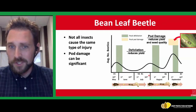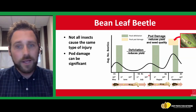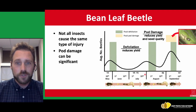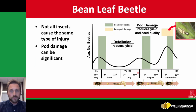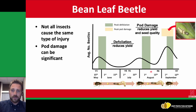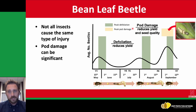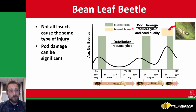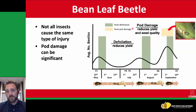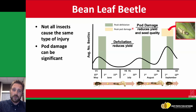Bean leaf beetle is back. It has two adult activity periods during the course of the summer, again overwintering as an adult. It's important as we get into the reproductive stages to acknowledge that this insect also feeds on pods. Pod damage reduces seed quality and yield, and it's an important factor to consider. So it'd be a good idea if you're seeing bean leaf beetle in your sweep net to take a look at pods and see if they're causing any injury. There are good thresholds for this insect if you start to see this in soybean fields.